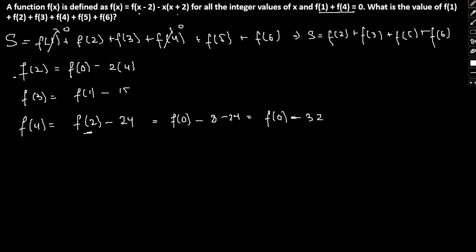f(5) will be f(3) - 5 times 7, that is 35. So f(3) we already know, this is the value of f(3). I am going to substitute the same, being f(1) - 15 - 35. So it will be f(1) - 50. And similarly for f(6) we will have f(4) - 48. I am going to substitute this value f(0) - 32, so minus 32 minus 48 gives us 80. So it will simply be f(0) - 80.